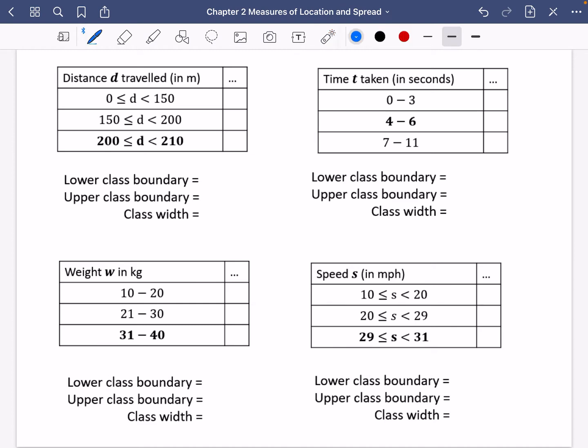Okay, so for this first one, it is already in its true class limits form. There's no gaps. So because there's no gaps, I can just go straight in and say to the bold group, the lower class boundary is 200. The upper is 210. So the class width, the difference between them is just 10.